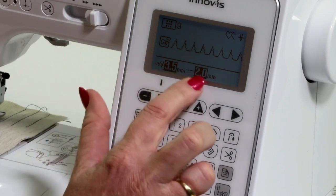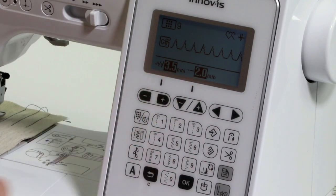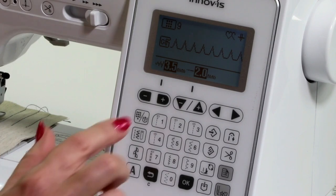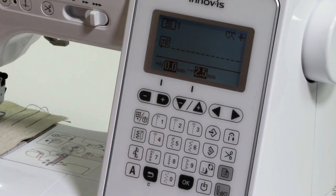Then it automatically sets the width and the length for me. So what I'm going to do is just go back to my straight stitch here.